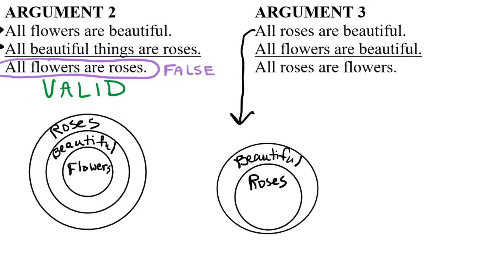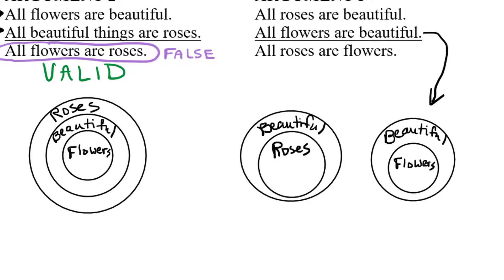Let's look at one more example. In argument three, the first premise is 'all roses are beautiful,' so the roses circle is inside the beautiful circle. The second premise is 'all flowers are beautiful,' so the flower circle is also inside the beautiful circle. We need to put these together into one diagram. Remember, when drawing your Euler diagram you cannot assume any facts besides what the premises tell you — you have to ignore your life experience. Pretend like you're an alien who just dropped down on the planet and only knows the two given facts. We can't draw two separate beautiful circles; it has to be one big circle for beautiful.